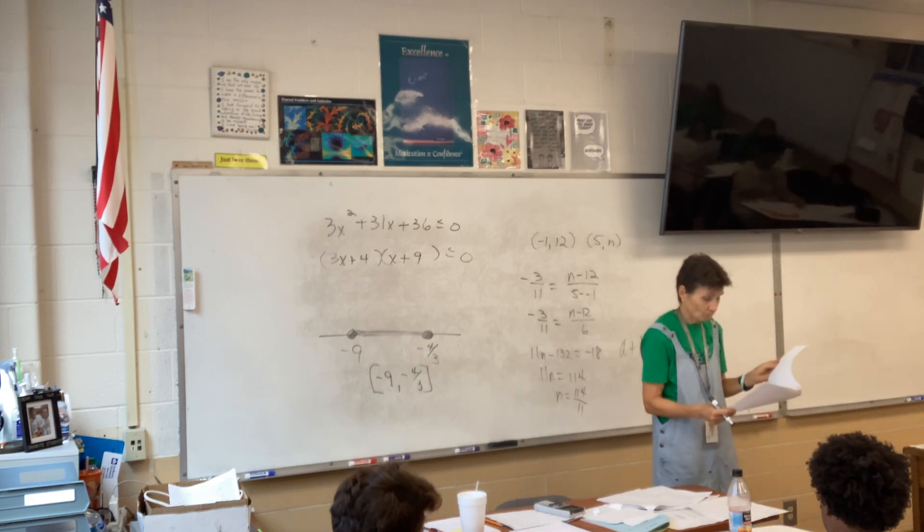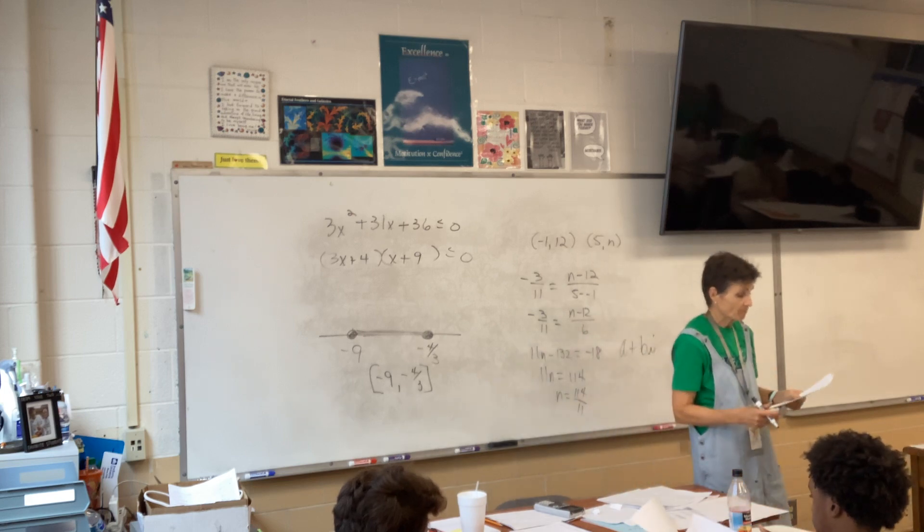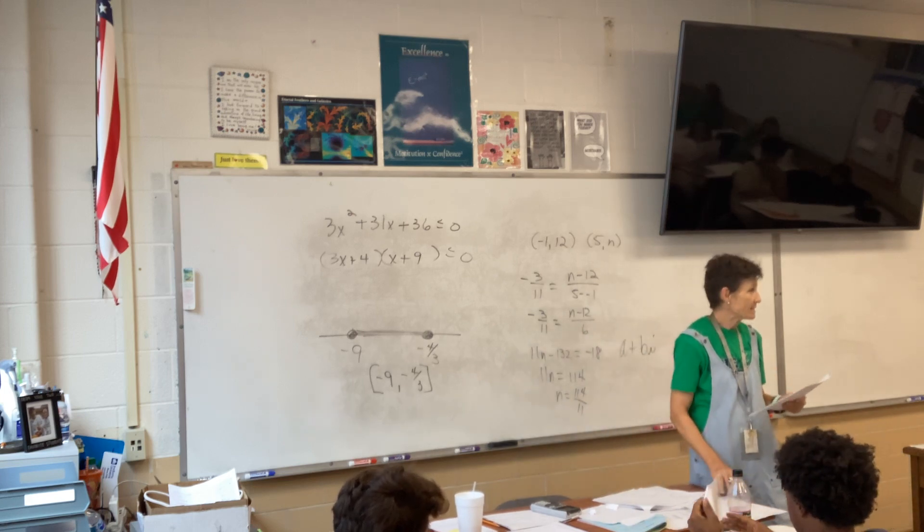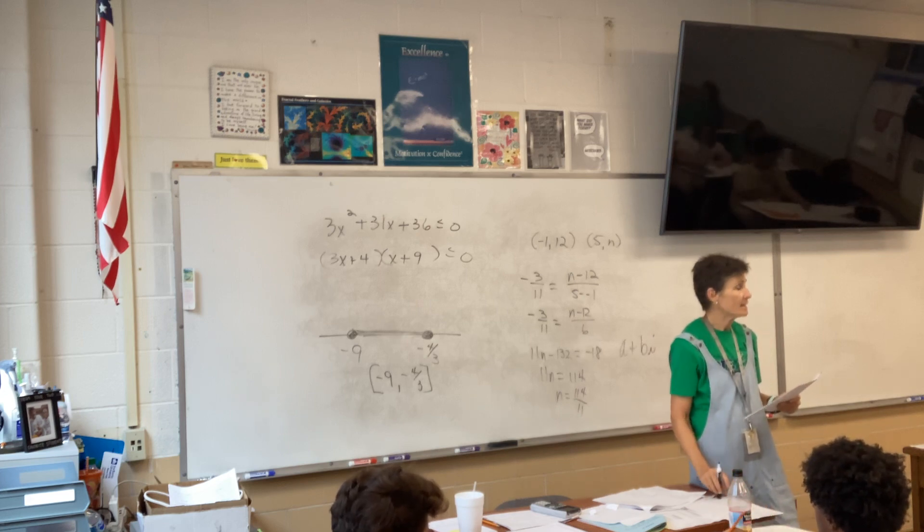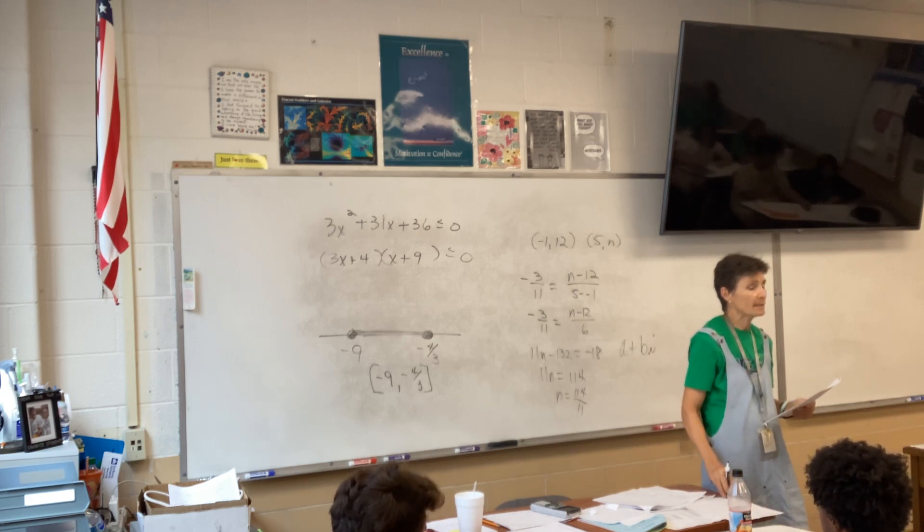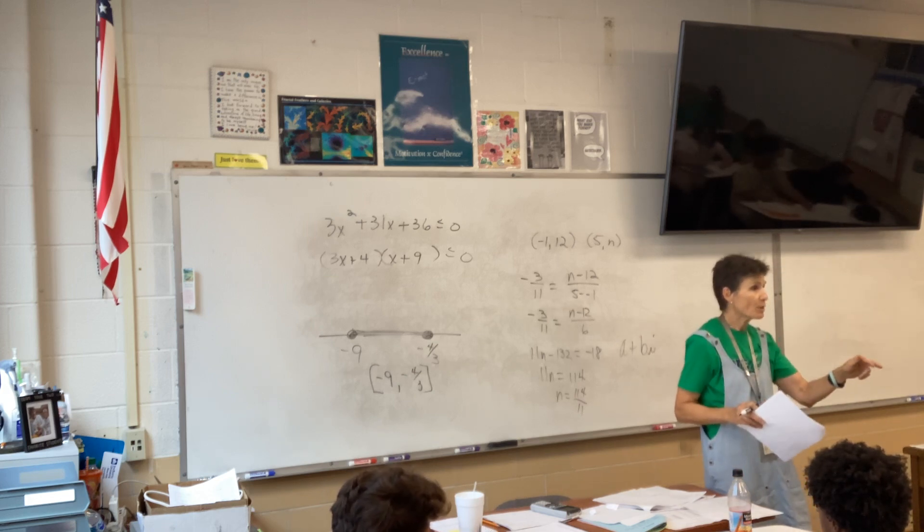All right. What else? Can you do number 10? These are our properties. All right. What's A? What's A? Transitive of inequality. Kids, if there are two properties, like there's two transitive properties, you have to identify which one it is.